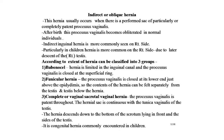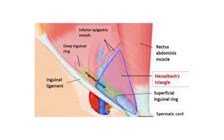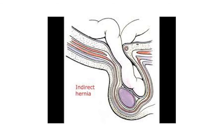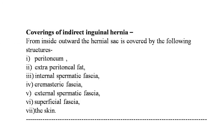Here is a good picture of Hesselbach's triangle showing the inferior epigastric vessels, the deep inguinal ring, the inguinal ligament in white, the rectus abdominis muscle, the superficial inguinal ring, and the spermatic cord. Medially the inferior epigastric vessels, laterally the rectus abdominis, and at the lower side the inguinal ligament. Here is a clear Hesselbach's triangle, which is the weakest part of the abdominal wall. This is the typical picture of indirect hernia showing the sac and its content — a loop of intestine seen within the sac.